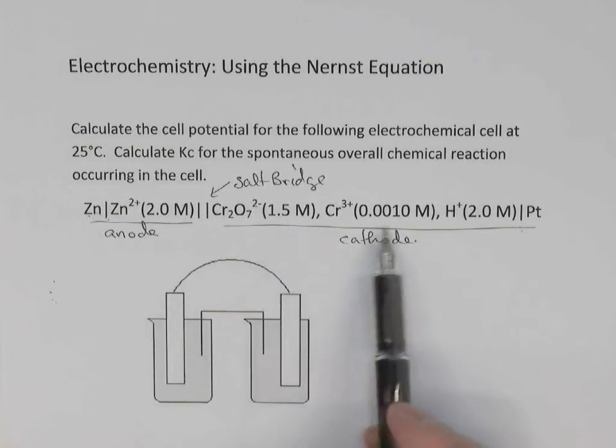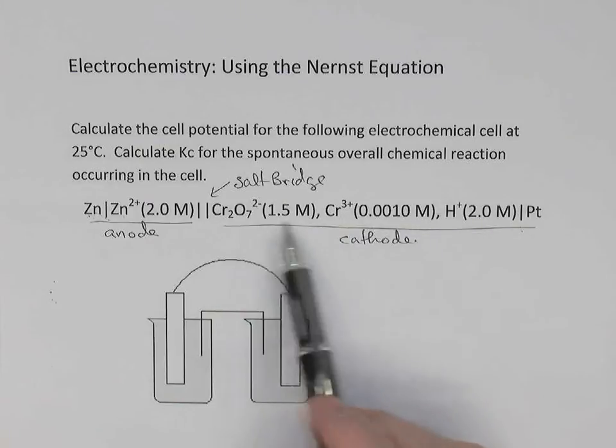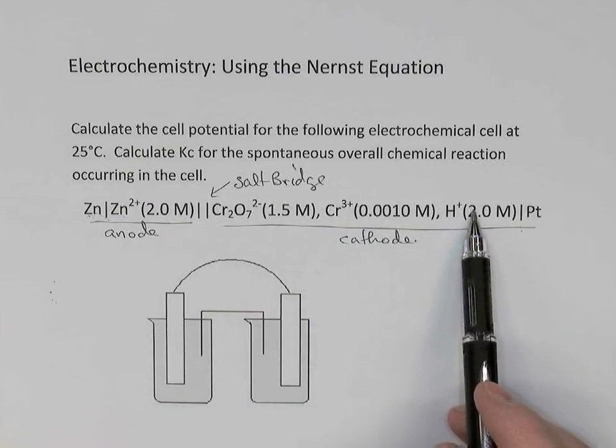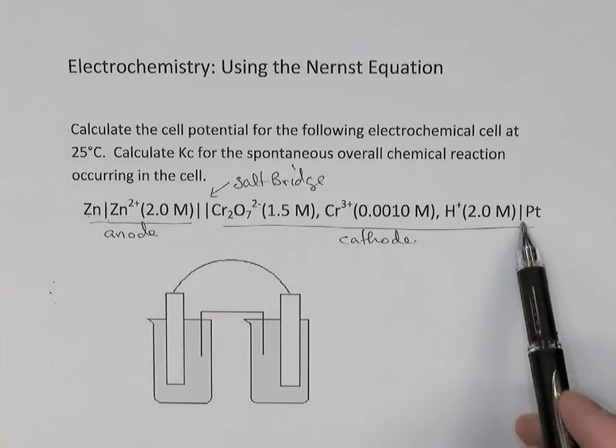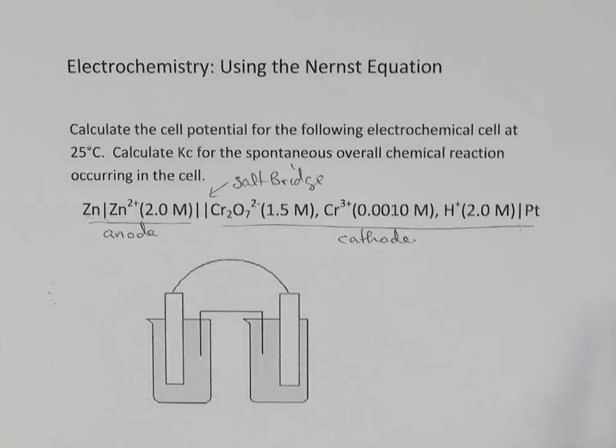On the right, in the cathode half cell, we have several aqueous substances: dichromate, chromium-3, and hydrogen ions. And they are in contact with a phase boundary with a platinum electrode which we know is inert.